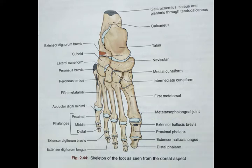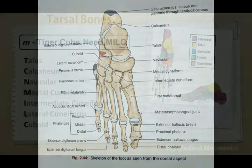There are 7 tarsal bones: talus, calcaneum, navicular, and 3 cuneiforms — those are medial cuneiform, intermediate cuneiform, lateral cuneiform — and cuboid.